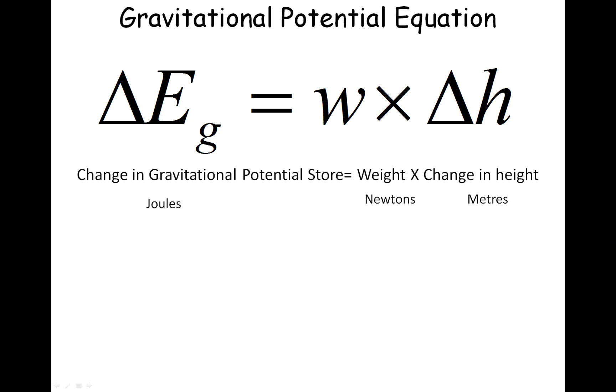Delta means a change in. So we have change in EG, which means energy, gravitational potential, is equal to, on the right hand side,